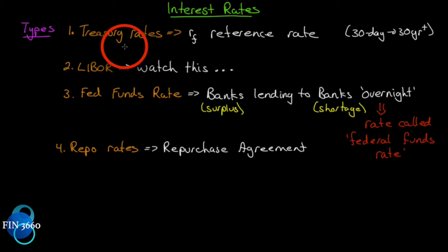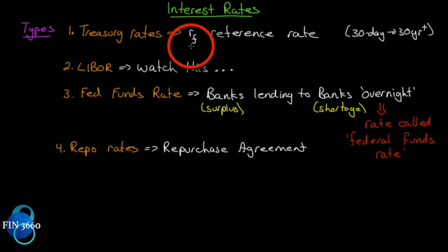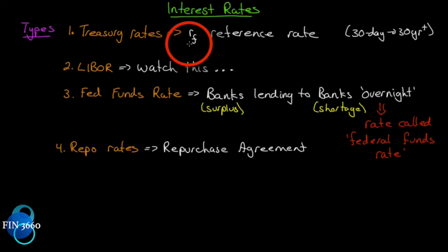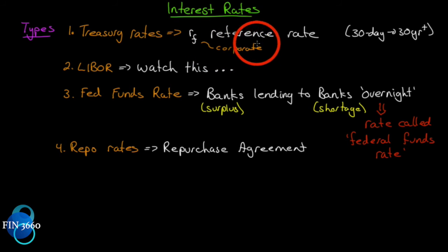Treasury rates are the rates on government-issued securities in whatever country you're in. In the U.S. you look to U.S. government securities; in Japan, Japanese bonds; in Canada, Government of Canada bonds; in the UK, gilts. Your own country's bonds are your treasury rates, and they're considered the risk-free rate within that country. They tend to be a reference rate for corporate bonds.